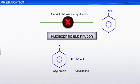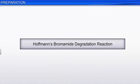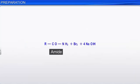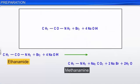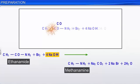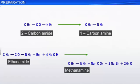Let us look at yet another important method for the preparation of amines: Hofmann's bromamide degradation reaction. Hofmann developed a method for preparing primary amines by treating an amide with bromine in an aqueous or alcoholic solution of sodium hydroxide. For example, ethanamide on treatment with bromine in the presence of sodium hydroxide gives methanamine. Note that in this reaction the resultant amine formed has one carbon atom less than the parent amide. Hence, this reaction is used to step down the carbon chain.